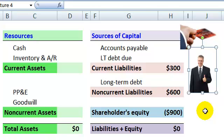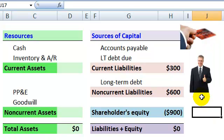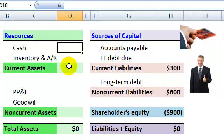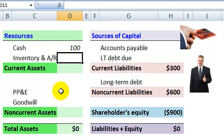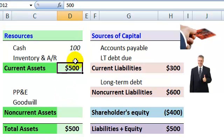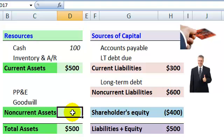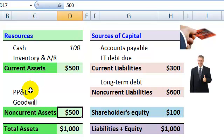We also need a shareholder or shareholders, and let's say they contribute $100 in cash, such that combined with some initial inventory to get the company started, the company has $500 in current assets. Then the company uses the rest of the debt to purchase plant, property, and equipment — fixed assets or non-current assets — worth $500.